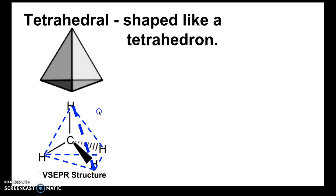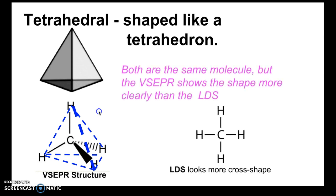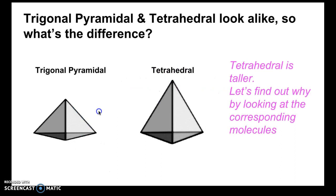Now if you compare the VSEPR structure of methane to its Lewis dot structure, once again that VSEPR structure is a better representation of the shape whereas the Lewis dot structure looks more cross-shaped.